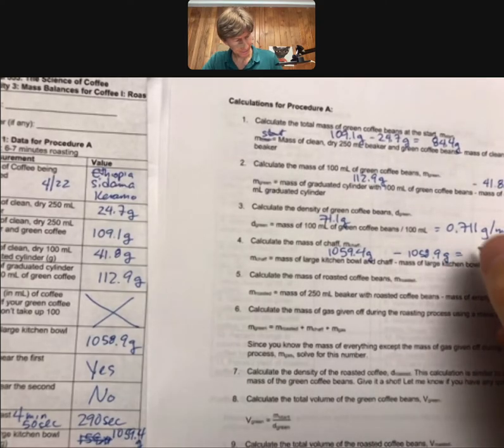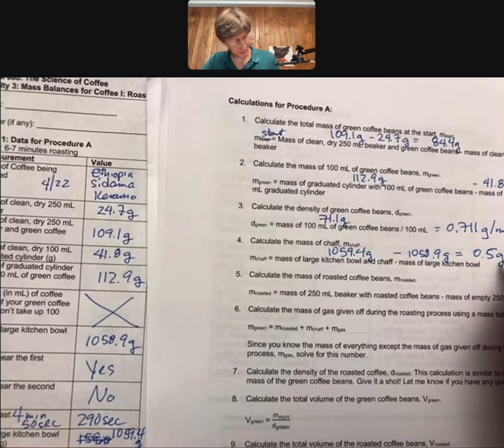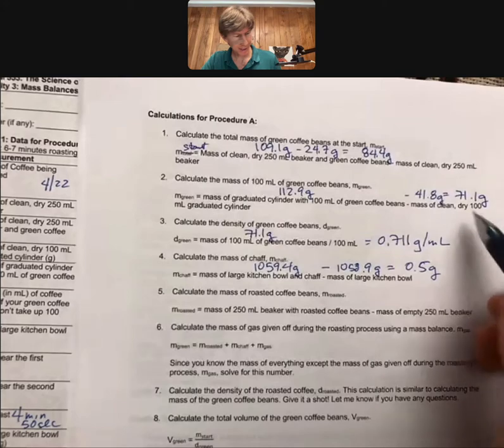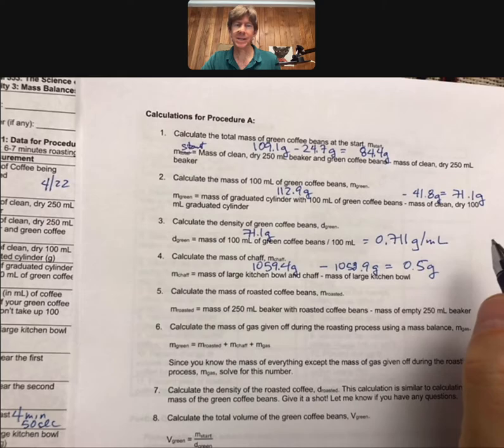And I got, I can do this in my head, 0.5 grams. That's a tiny amount, 0.5 grams compared to either 71 or 84.4 that we started with is a pretty small amount. It's not zero, but it's pretty small.